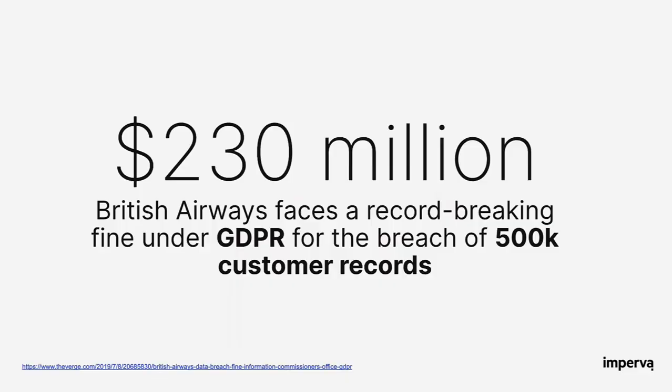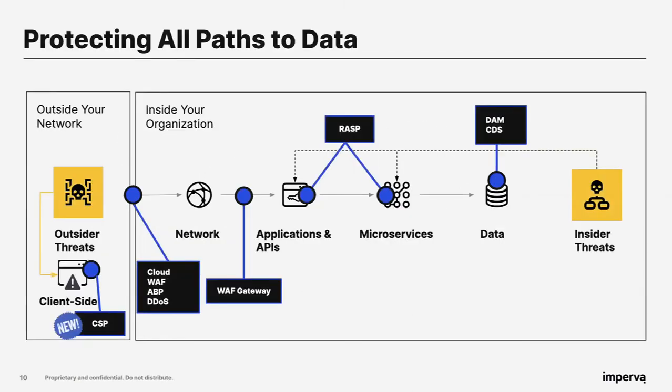One of the biggest high-profile attacks was against British Airways, which faced a record-breaking fine of £230 million under GDPR for a breach of 500,000 records from one of these client-side attacks. This illustrates the significant compliance and financial consequences depending on what data is compromised.